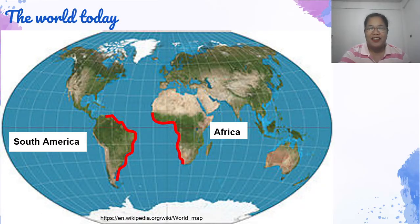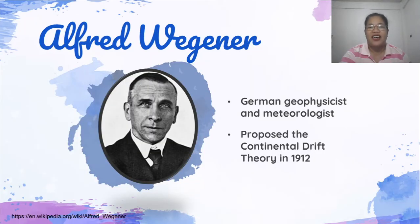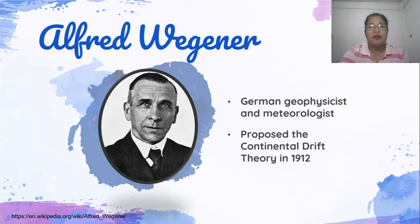Naisip mo ba yun? Kung oo, ay pareho kayo nang iniisip ni Alfred Wegener. Everybody say Alfred Wegener. Isa siyang German geophysicist and meteorologist. Pinag-aaralan niya ang klima ng mundo noon at ngayon. At dahil sa kanyang obserbasyon, ipinropose niya ang Continental Drift Theory noong 1912.